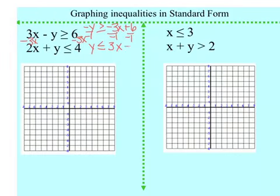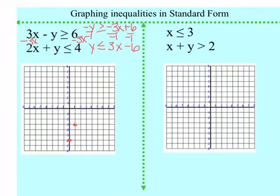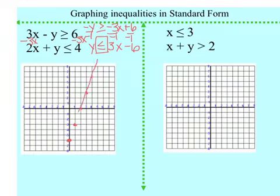So I get 3x and negative 6. I can go ahead and graph that — starting at negative 6. My slope is a positive 3, so I'm going to go up 3 over 1. Now I look at my symbol — remember we changed it, so it's a less than or equal to, which means a solid line. And then less than tells me to shade everything down, so I'm going to shade everything on this side.